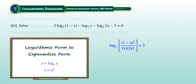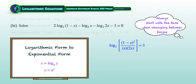Next, we convert this logarithmic form to exponential form. We start with the base — both the logarithmic and exponential forms share a base of 2. The exponent comes from the opposite side of the logarithmic equation, which is 3. We now write the fraction of the square of (1 minus x) divided by 2x squared on the left side.